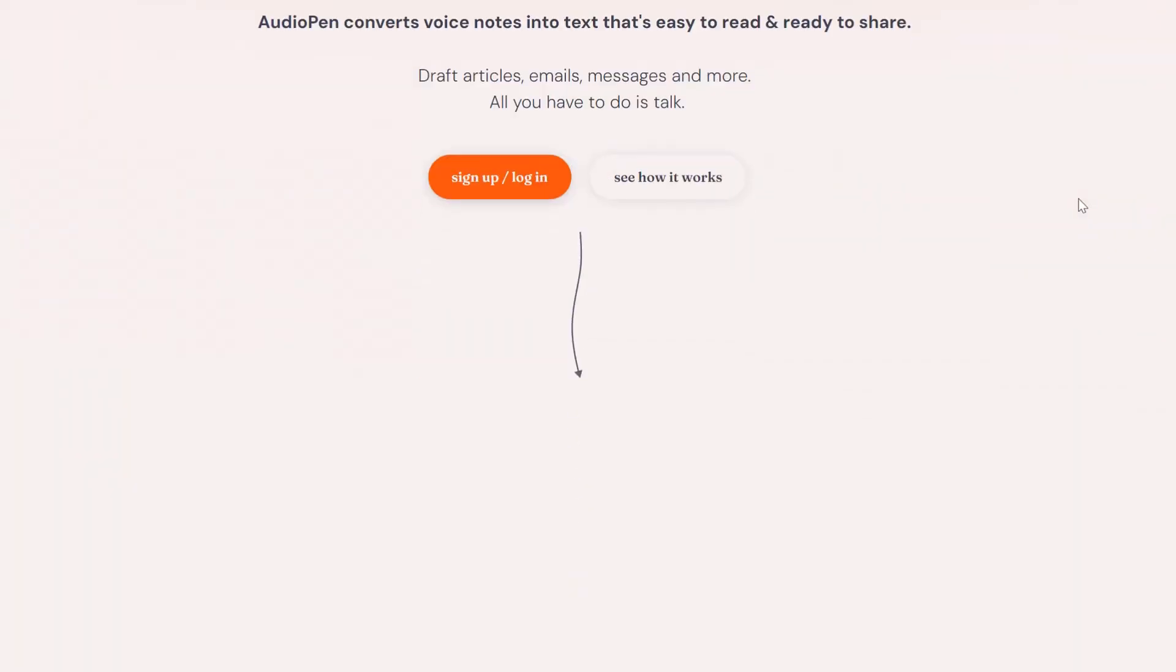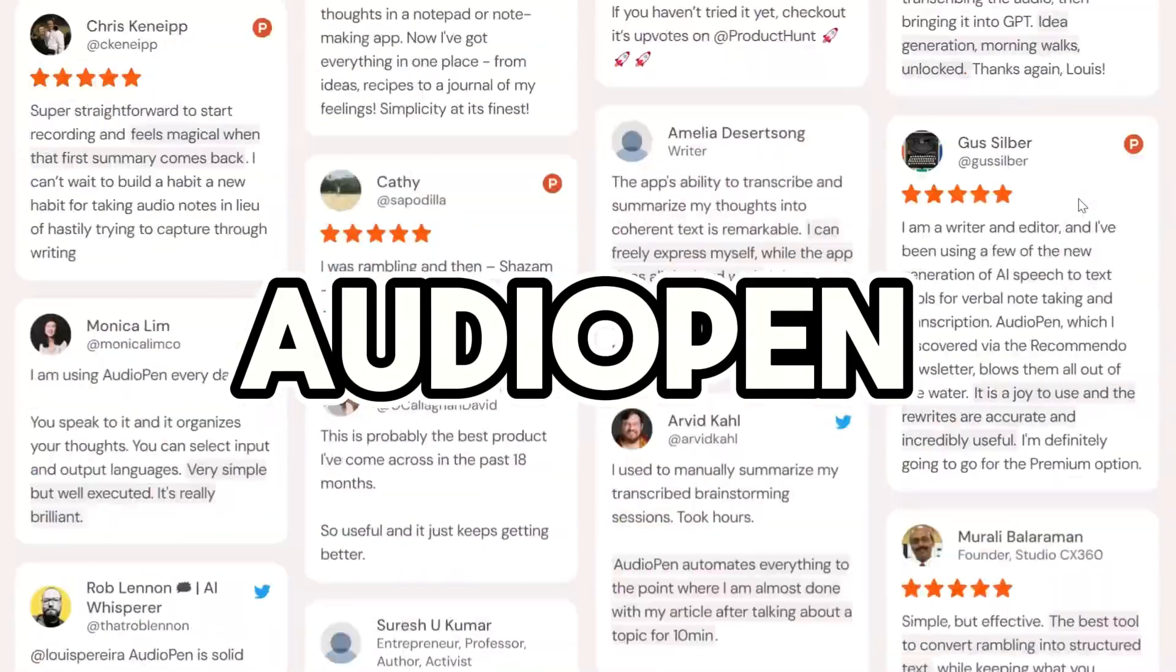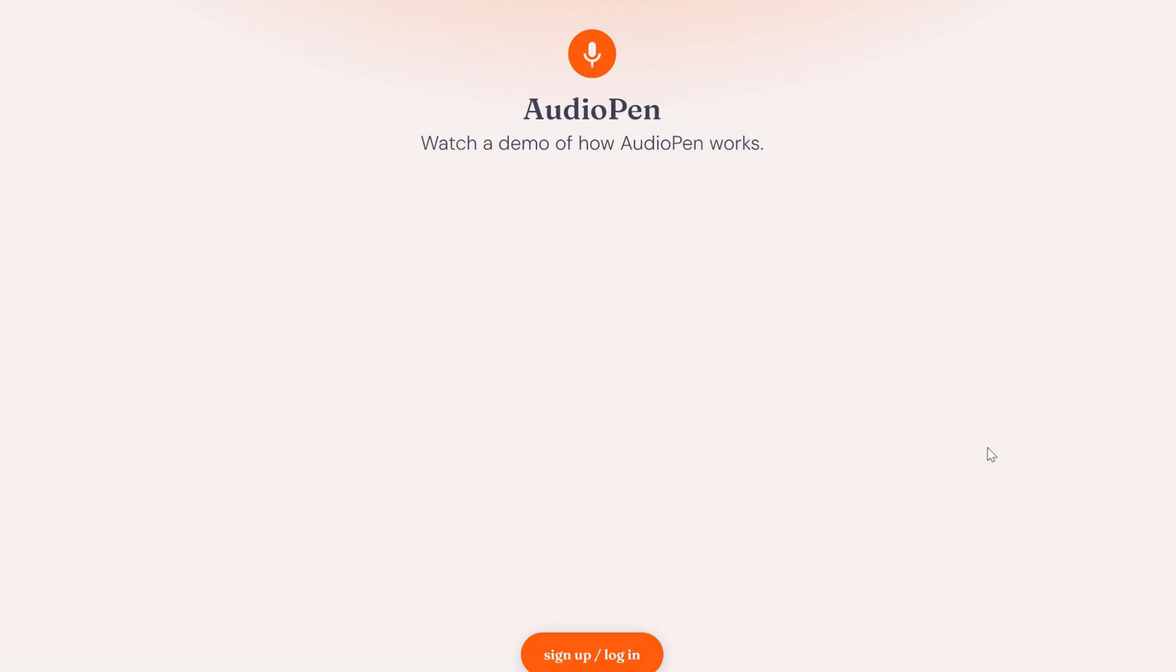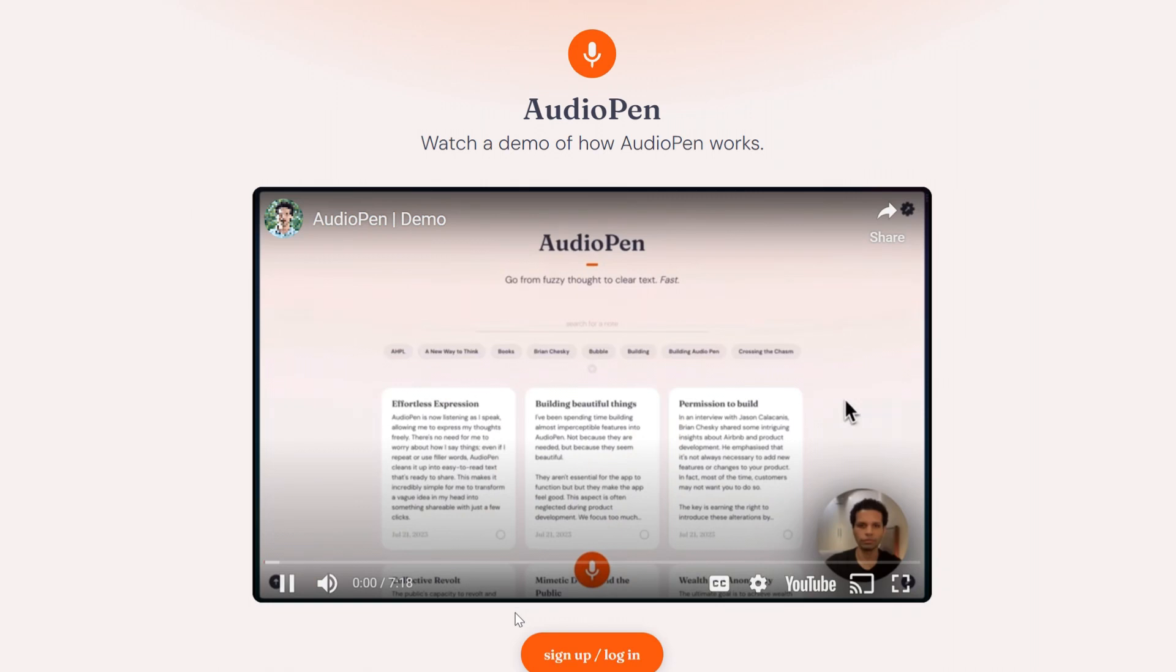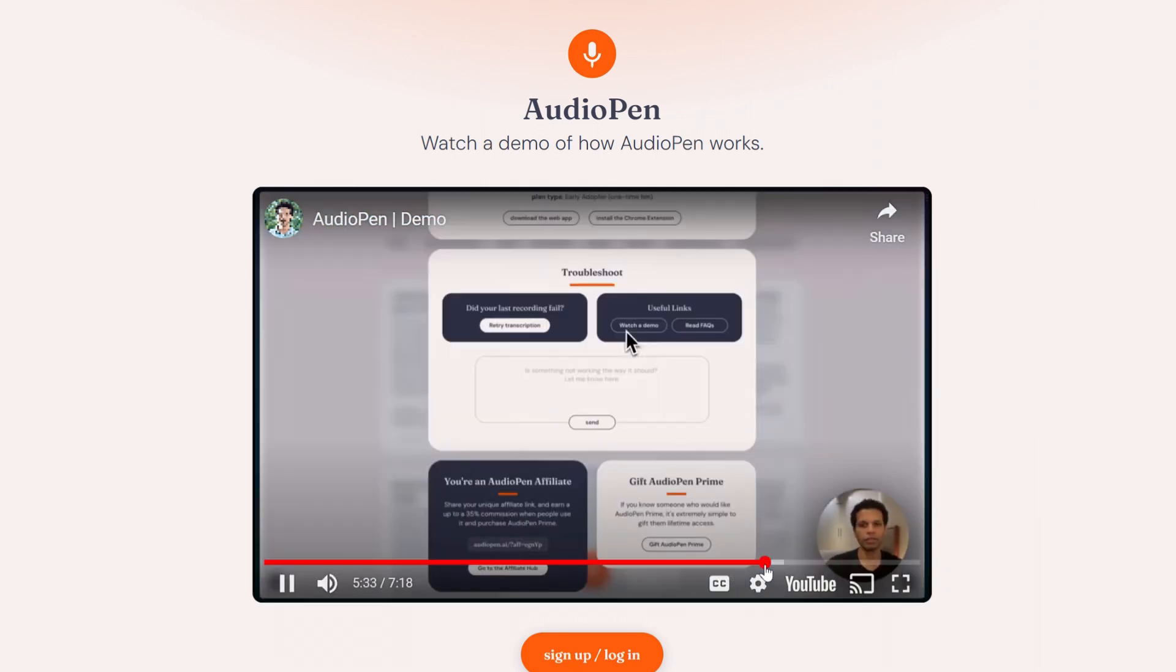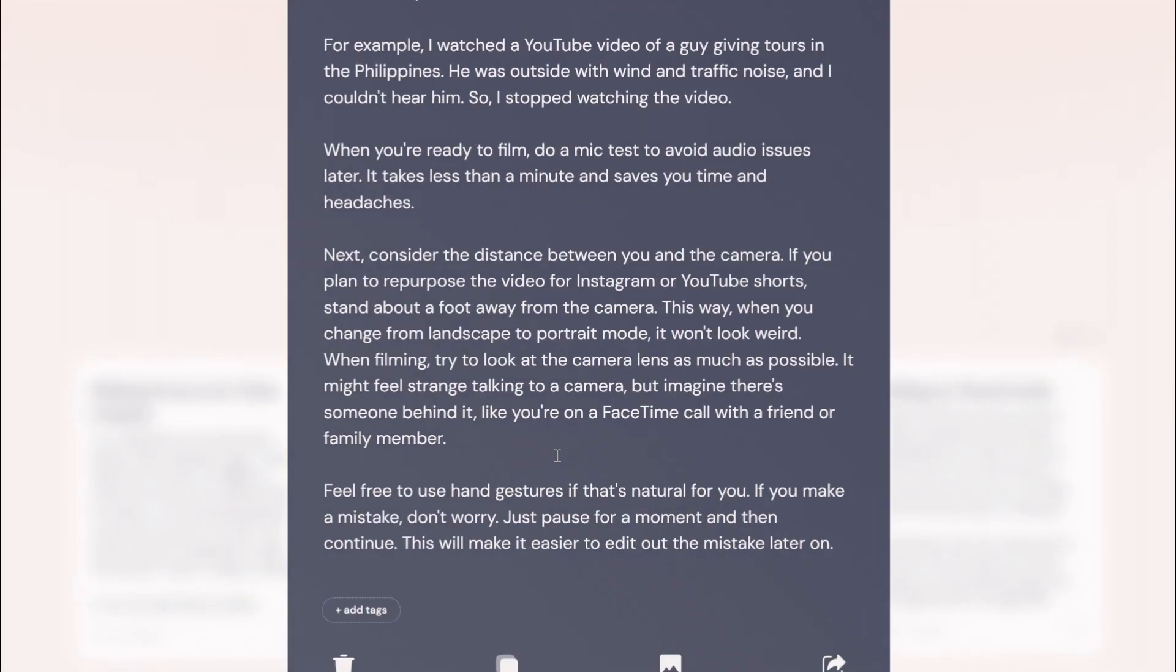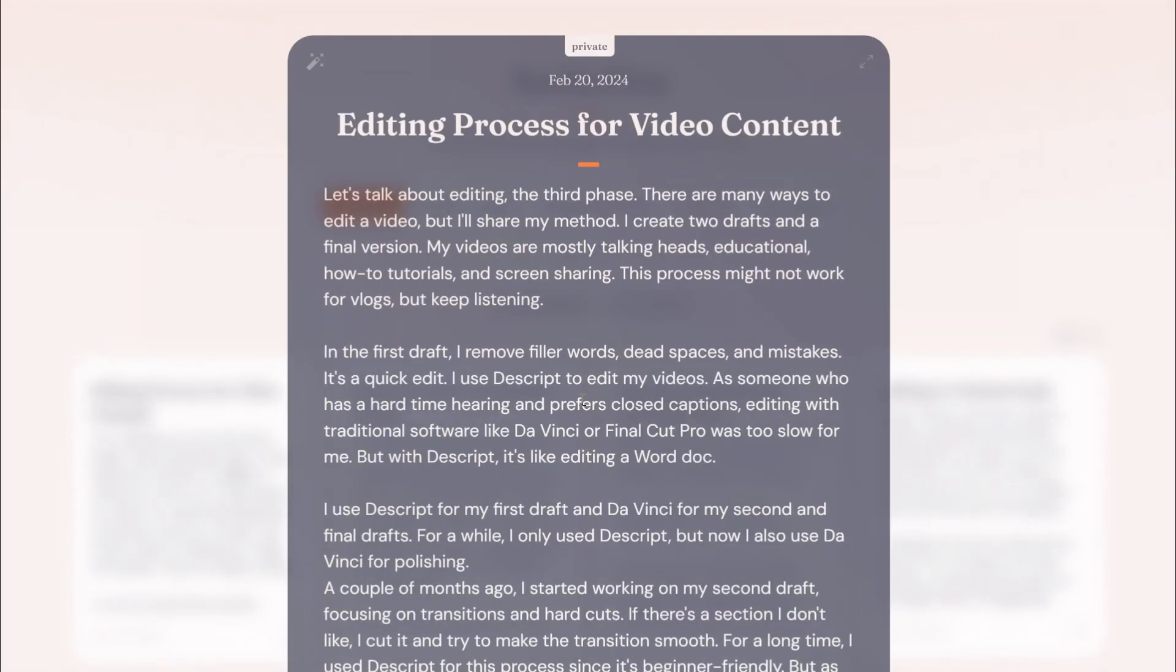To create my scripts, I use a helpful tool called AudioPen. This is not a sponsored video, but I do have an affiliate link in the description below if you want to check it out. AudioPen is a text-to-speech tool that helps me organize my thoughts in a clear way. I'm actually using AudioPen right now to write this script.